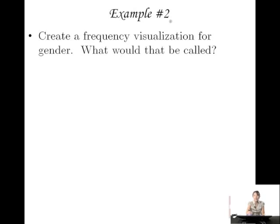Now let's move on to example two. Let's create a frequency visualization for gender. What would that be called? Let's answer this question first. What kind of variable is gender? Well, gender, you could have values such as male, female, blank. And so we would consider that a categorical variable. And when you have a categorical variable, we know we're going to be making a bar graph.